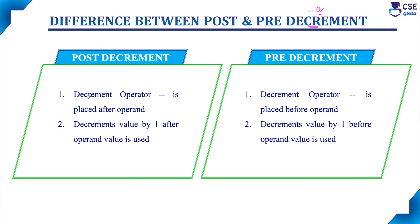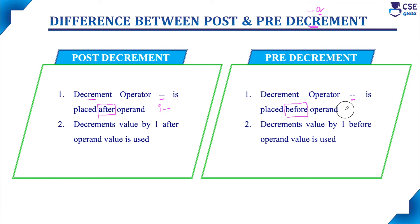In post decrement, the decrement operator minus minus is placed after the operand. For example, if 'i' is the operand, the operator is placed after the operand — that is post decrement. In pre decrement, the decrement operator is placed before the operand: the operator is placed first and then the operand is placed.